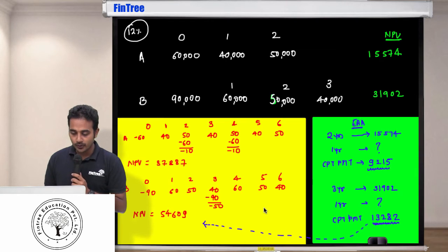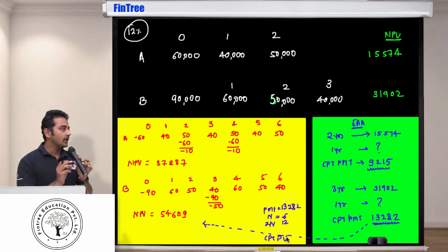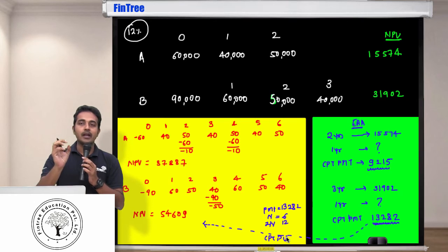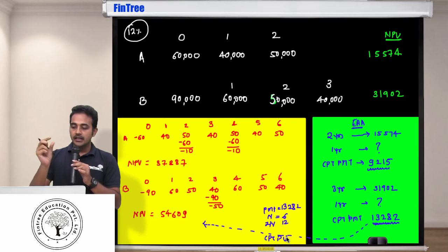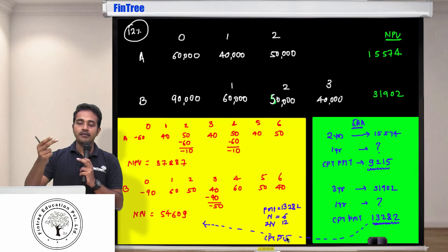I want you to understand the logic behind this. The logic is this: when I do project A, every year I earn 9,215. So if I do project A for two years, then on a totality basis I will earn 15,574.